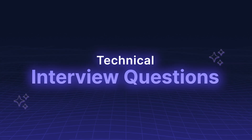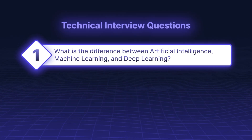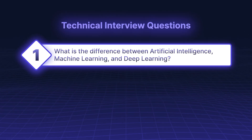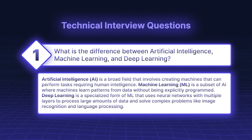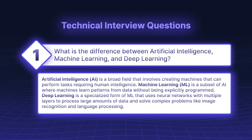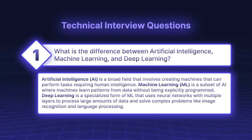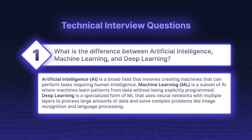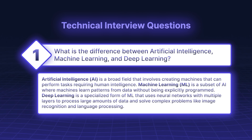Technical interview questions. What is the difference between artificial intelligence, machine learning, and deep learning? Artificial intelligence (AI) is a broad field that involves creating machines that can perform tasks requiring human intelligence. Machine learning (ML) is a subset of AI where machines learn patterns from data without being explicitly programmed. Deep learning is a specialized form of ML that uses neural networks with multiple layers to process large amounts of data and solve complex problems like image recognition and language processing.